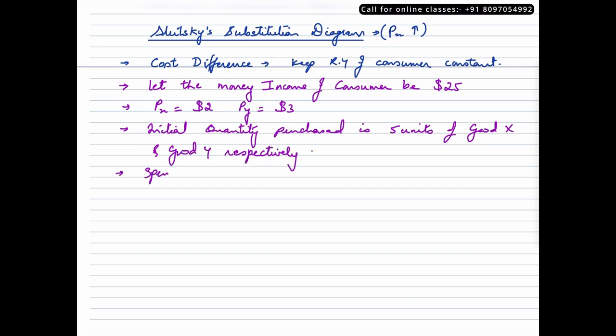The initial quantity purchased is 5 units of good X and good Y respectively. So spending on good Y is $3 times 5 units, which is $15, and good X is $2 times 5, which is $10.